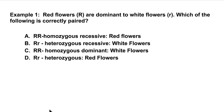Example one: Red flowers, big R, are dominant to white flowers, small r. Which of the following is correctly paired? In answer A, you have big R, big R. The question is: is big R, big R homozygous recessive? Well, it's homozygous, but it's not recessive. And big R, big R corresponds to red flowers, not homozygous recessive. So A is wrong.